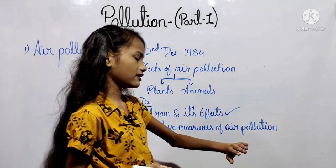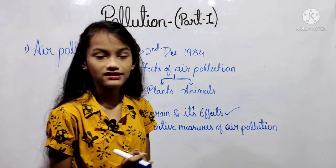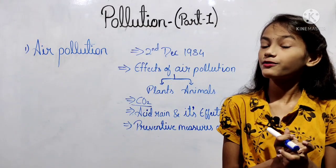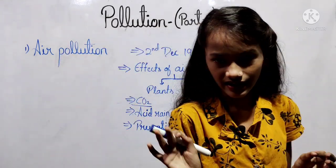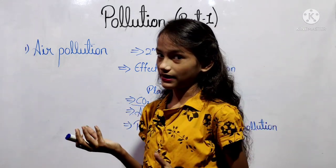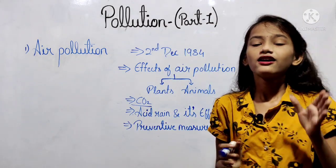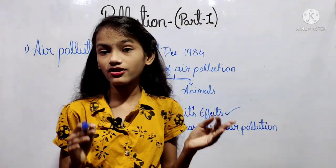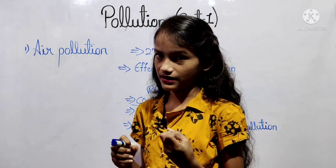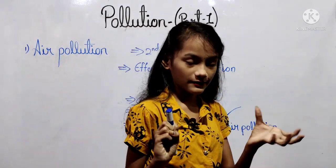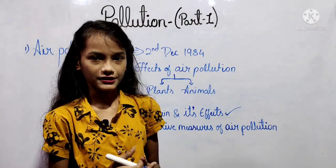The preventive measures of air pollution are: first, pollution-controlling machinery such as arrestors and filters should be used in factories to control harmful particles in smoke. Second, proper disposal of waste generated in cities. Third, control on atomic tests and chemical weapons. Fourth, control over CFC production.